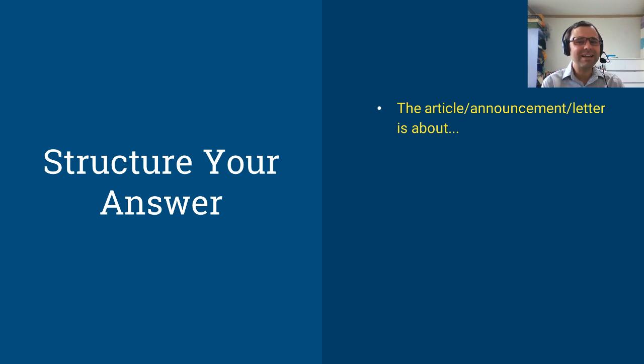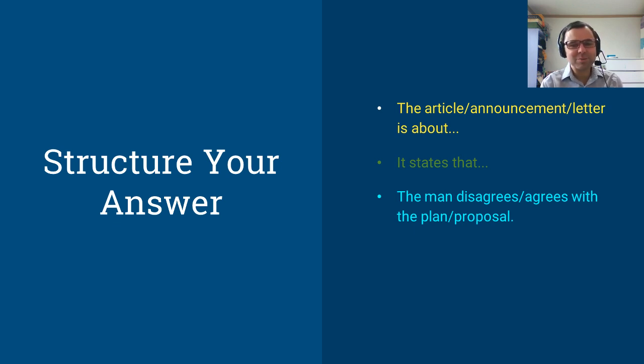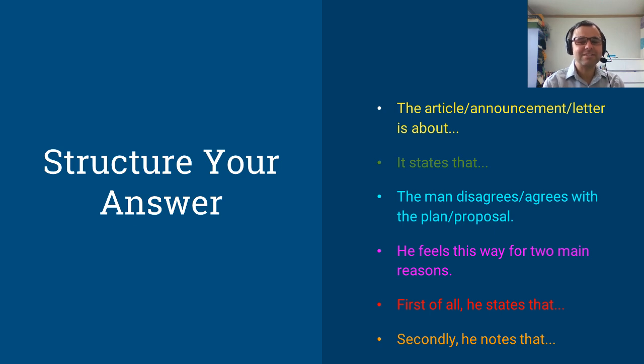First of all, you should say something like, the article is about. The announcement is about. The letter is about. It states that. And here is where you put in your notes about the announcement. The man agrees with the proposal. The man disagrees with the proposal. The man agrees with the plan. The man disagrees with the plan. He feels this way for two main reasons, or she feels this way for two main reasons. First of all, he states that. First of all, she states that. That's where you're going to put your notes. Secondly, he notes that. Secondly, she notes that. And that's it. That's your template.